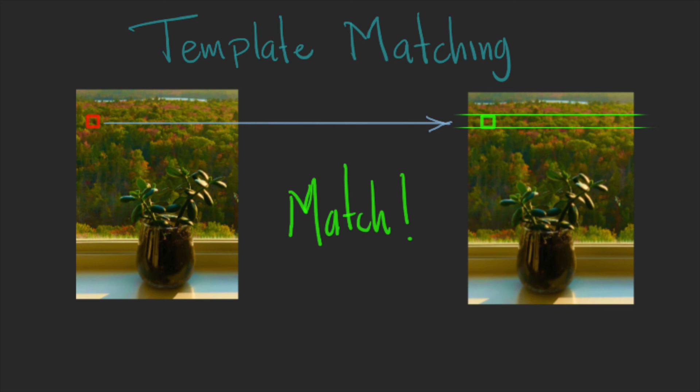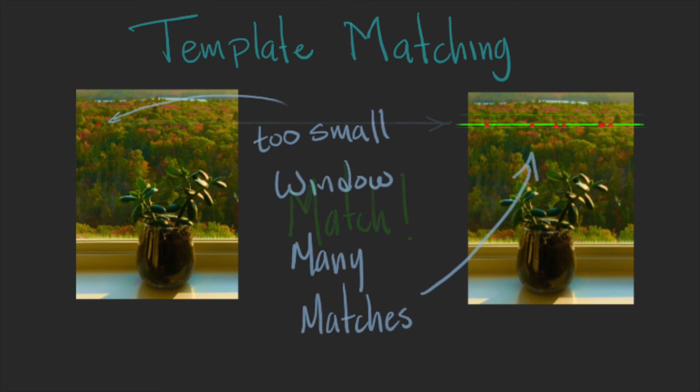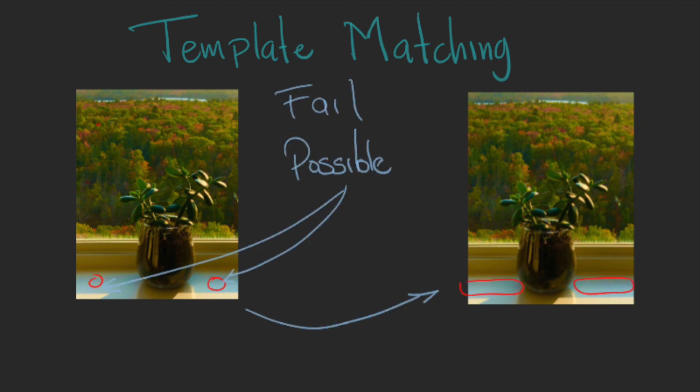Here is important to notice that the window needs to be big enough to get a certain pattern. If you take one pixel, or you make this window really small, this approach will fail. Because you will find many points that can match with the target. This also will happen if the images are mostly flat and do not have any texture.